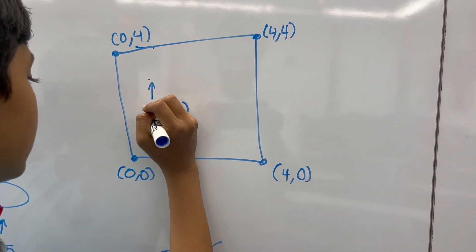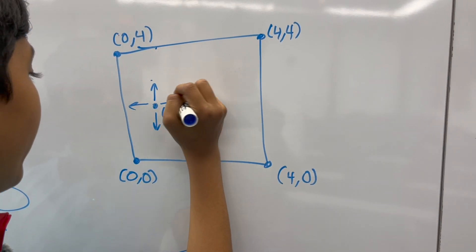And can only hop to lattice points on the plane. It can only hop up, down, left, or right. 1 unit.